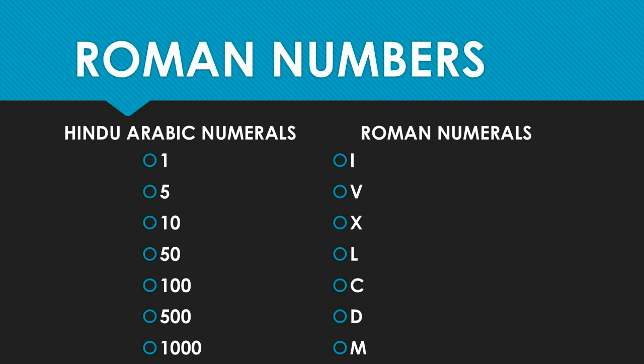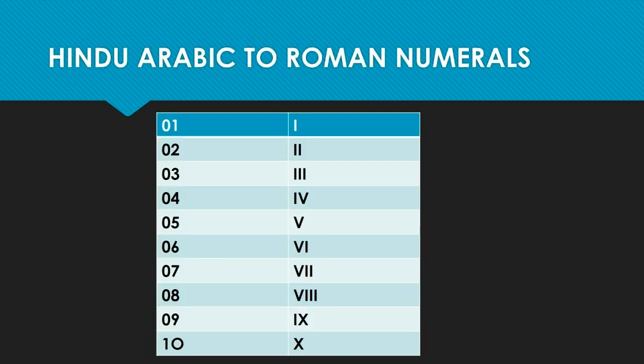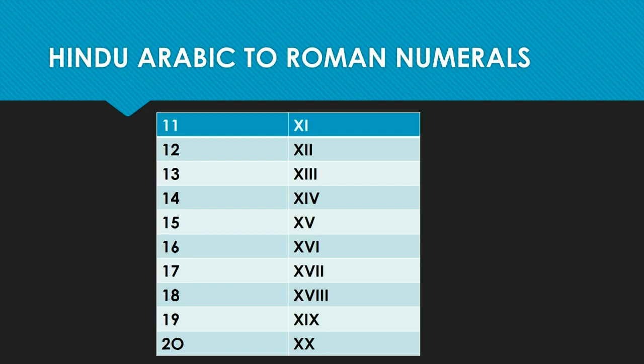Here in this page you can see all the Roman numbers from one to ten. One is I, two is II, three is III, four is IV, five is V, six is VI, seven is VII, eight is VIII, nine is IX, and ten is X.